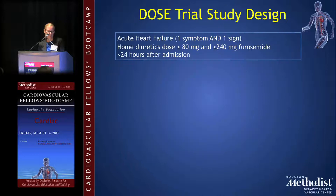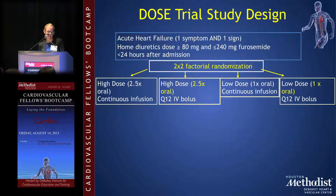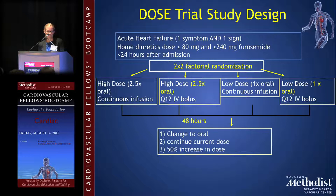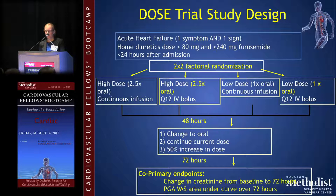In the DOSE trial design, patients with acute heart failure on a home Lasix dose greater than 80 but less than 240 milligrams were randomized within 24 hours of admission in a two-by-two factorial design. High-dose was defined as two-and-a-half times their oral dose, given either as continuous infusion or intermittent bolus; low-dose was the same as their oral dose, also continuous or Q12 bolus. At 48 hours, the team could switch to oral, continue the current dose, or increase by 50%. Primary endpoints were assessed at 72 hours.